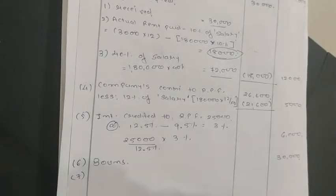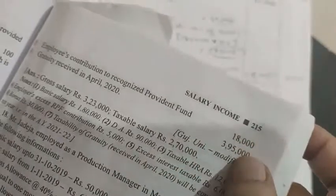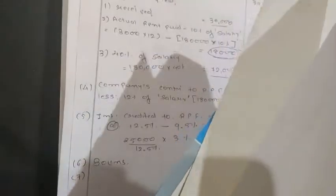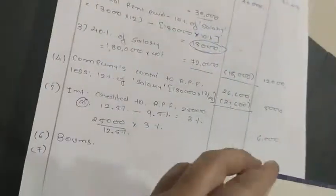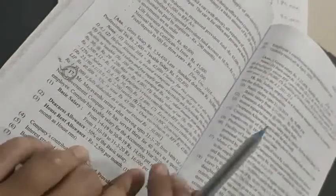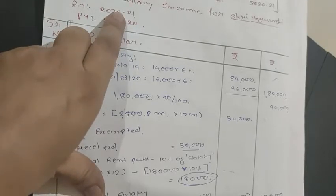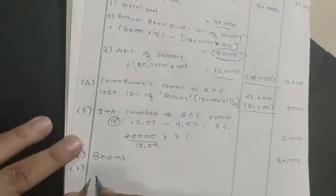Number 7: Employee's Contribution to Recognized Provident Fund = ₹18,000. This is not income — it will be deducted under Section 80C, so it is not included in salary computation here. Number 8 — Gratuity received in April 2020: ₹3,95,000. Since the assessment year is 2019-20 and gratuity was received in April 2020, it will be taxable in the next year, not the current year.